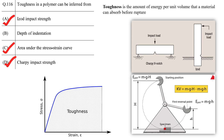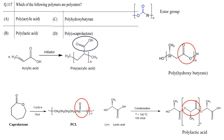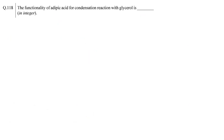This question asks you to identify the polyester polymers among the given options — it is also a multiple choice question. Polyester is a category of polymers that contains an ester functional group in every repeat unit of their main chain. Among the given options, except polyacrylic acid, the rest are polyesters: PLA, PMA, and polycaprolactone all possess ester groups in their repeat units, whereas polyacrylic acid contains a carboxylic acid group. Therefore options B, C, and D are correct.